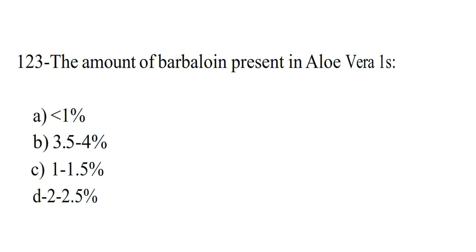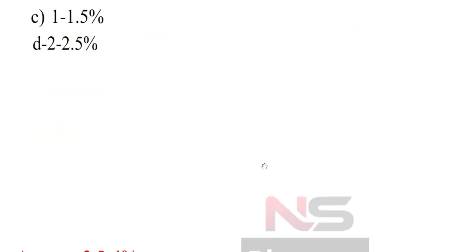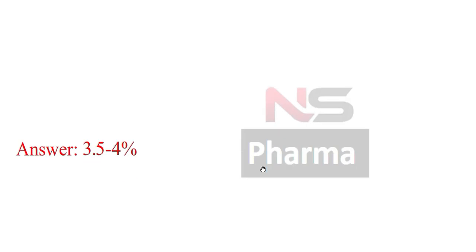Next question. The amount of barbaloin present in aloe vera is: Option A. Less than 1%. Option B. 3.5 to 4%. Option C. 1 to 1.5%. Option D. 2 to 2.5%. Answer: 3.5 to 4%.